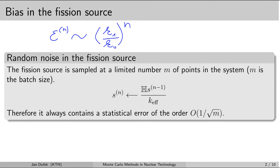In the derivation of this result we used an equation for iterating the fission source over the criticality cycles, and we made the assumption that there is an equal sign — meaning we are not introducing any random noise into the fission source at every cycle — which is not really true during a Monte Carlo criticality simulation.